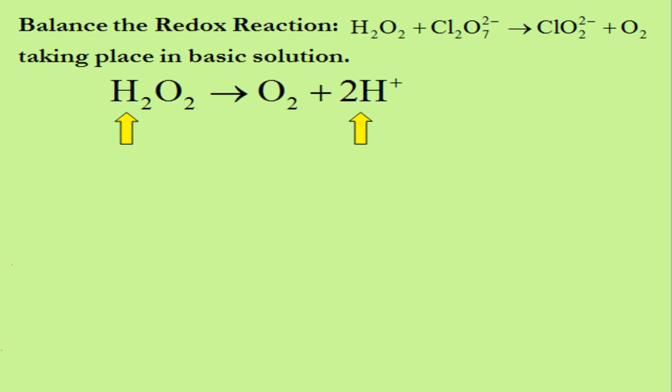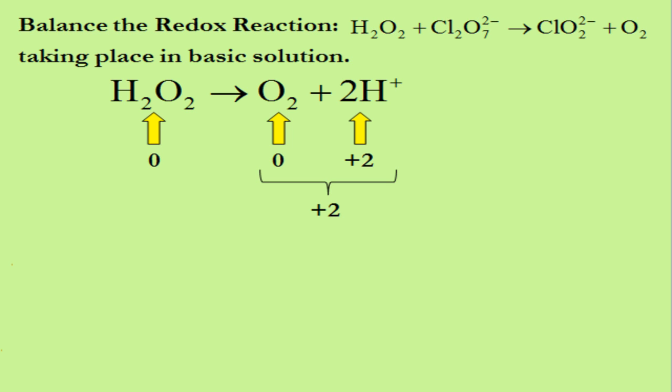Our next step is to balance charge. The total charge on the left side is zero, and the total charge on the right side is zero plus positive two, which is positive two. To balance charge, we add two electrons to the right side. The total charge on the right side is now zero plus two plus negative two, which is zero — the same as the charge on the left side. The half-reaction is now balanced in acid solution.